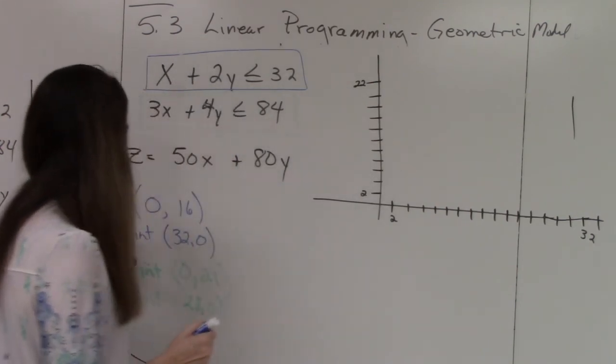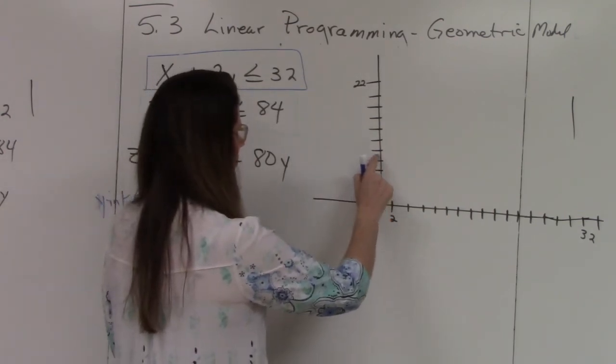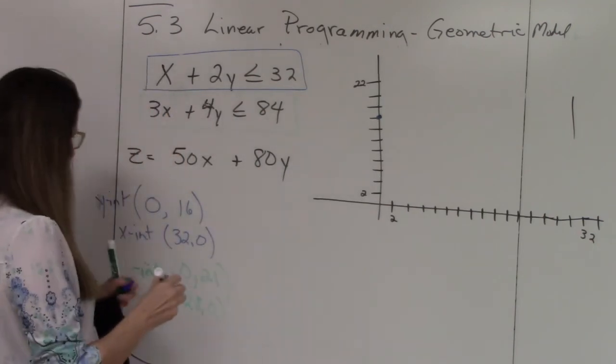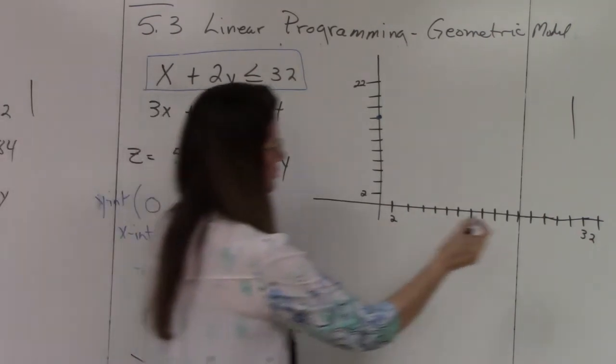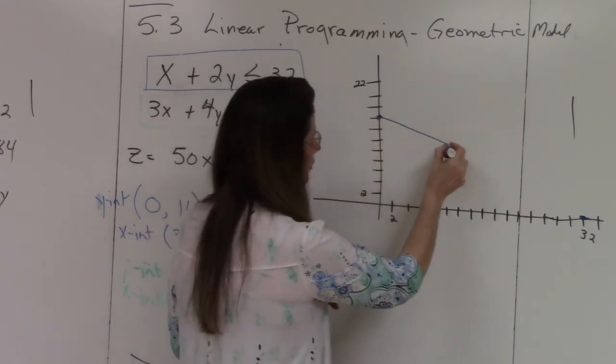So for my blue line, I have 0, 16. So 2, 4, 6, 8, 10, 12, 14, 16. So there's my Y-intercept. My X-intercept is 32, 0. So here's 32. So here's my blue line.